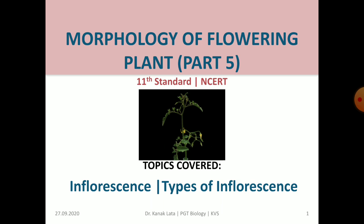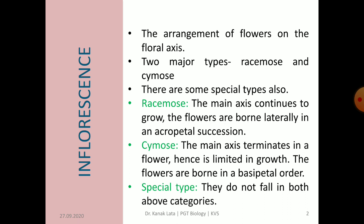First of all we will discuss about inflorescence. Inflorescence is the arrangement of flowers on the floral axis — means how flowers are arranged. It is of two major types: racemose and cymose. But there are some special types of inflorescence also. Further, racemose, cymose and special types of inflorescence are divided into different categories.